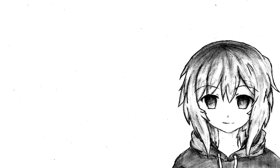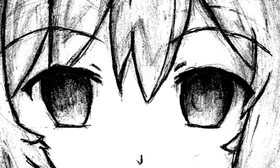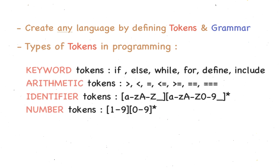Now we've defined how English works — great. You can create any language you want just by knowing the tokens and the grammar. For programming, we could have keyword tokens, arithmetic tokens, identifier tokens, number tokens, and so on.